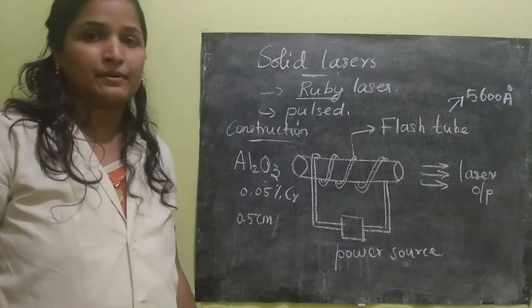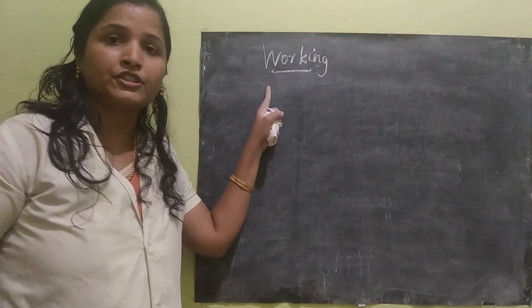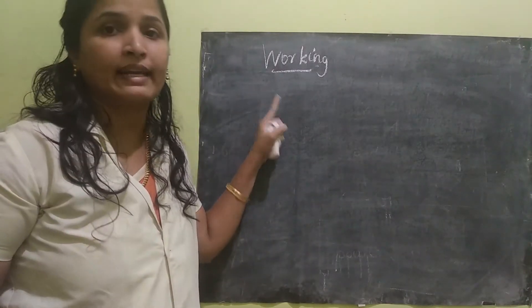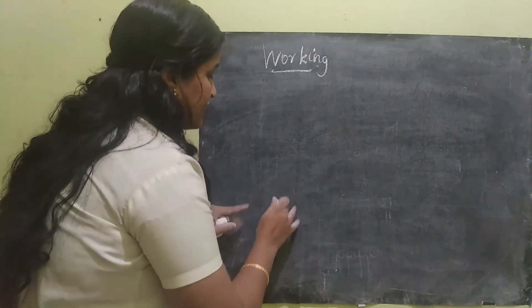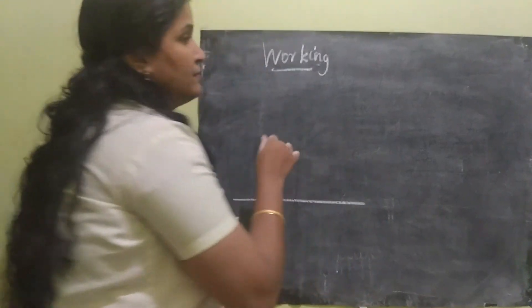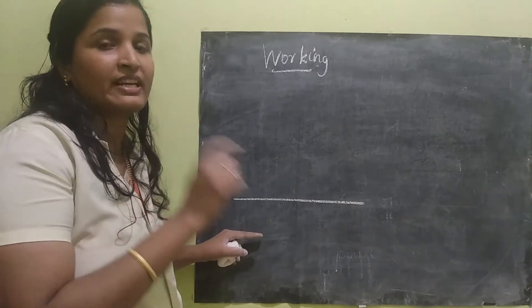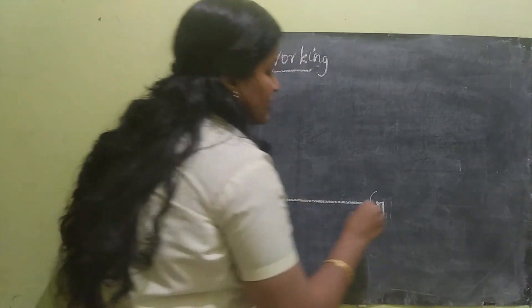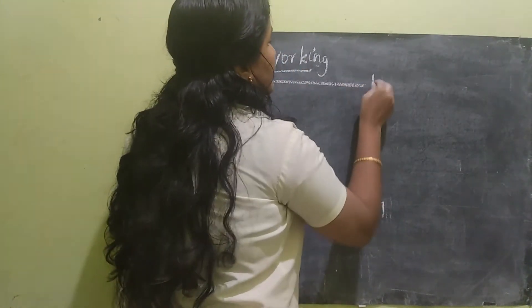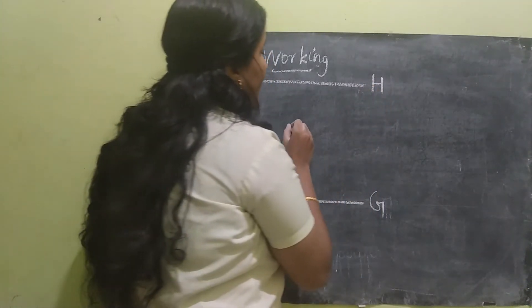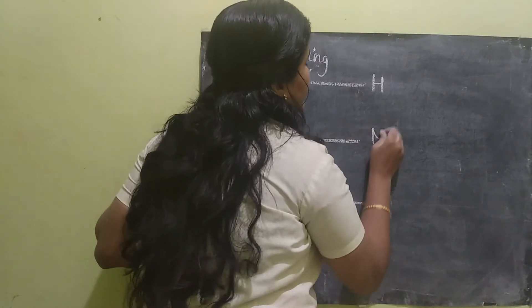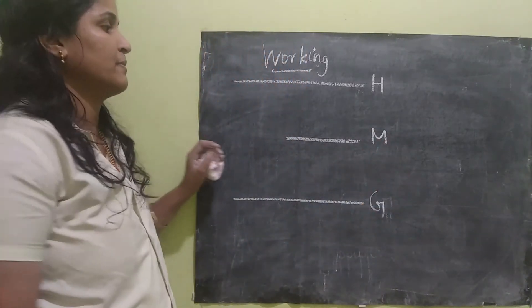Now let's see the working of it. In order to study the working of the solid laser, first we should draw the laser energy level. The ruby laser contains three energy levels. The first energy level is G, the second energy level is H which is the higher energy level, and here we will have a middle energy level which is the metastable state.